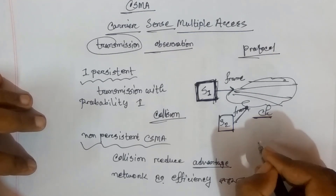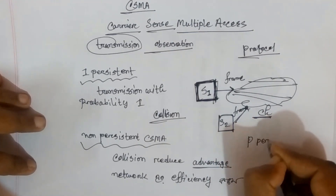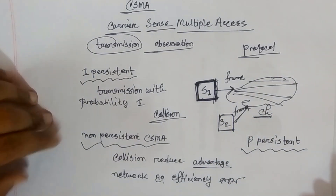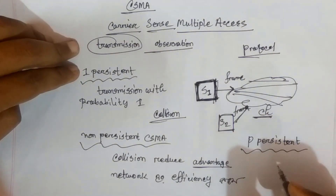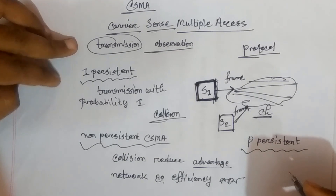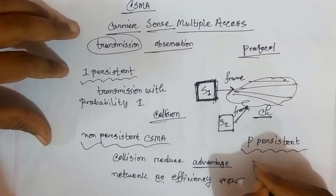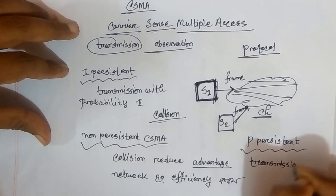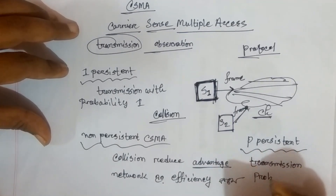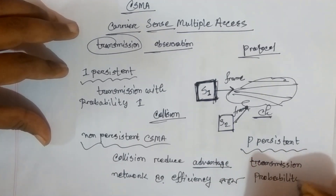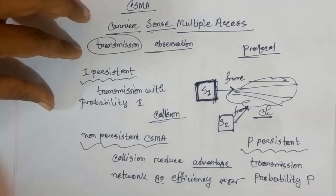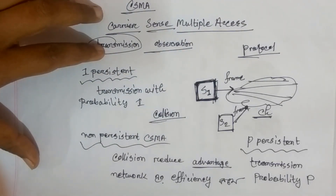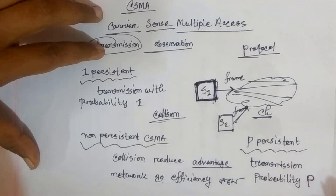The final CSMA protocol is P-Persistent. Like One-Persistent, P-Persistent also senses the channel, but the difference is in the transmission probability — it transmits with probability P, not 1. So P-Persistent uses a probability P for transmission.